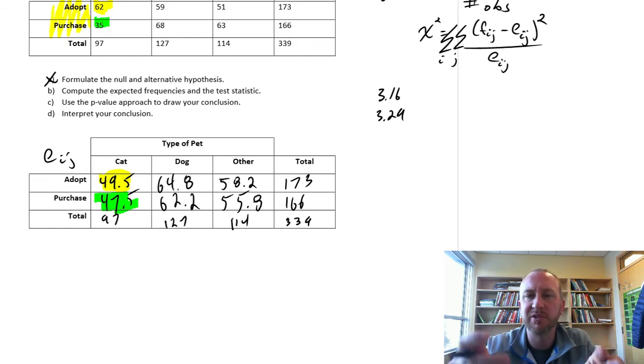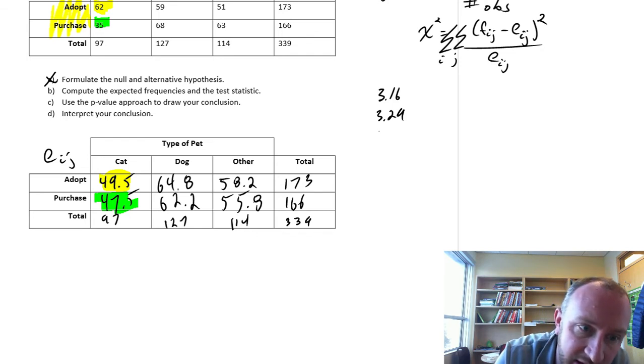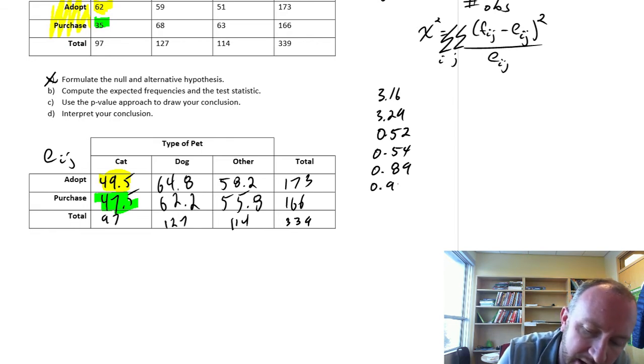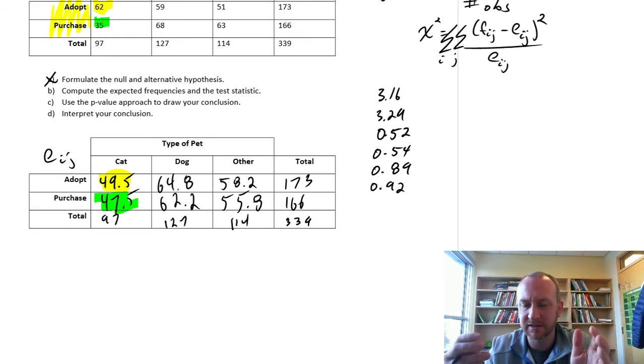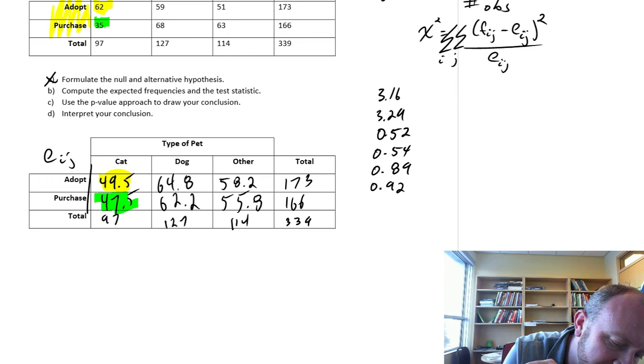And we can go through, so we have to do this 6 times. So I'm going to skip ahead to save us some time. So the next one will be 0.52, 0.54, 0.89, and 0.92. So I should have 6 of those different values for each of these 6 cells. We don't have to worry about these totals.